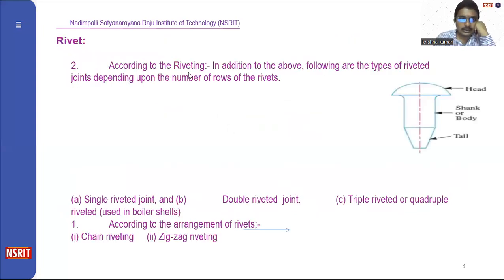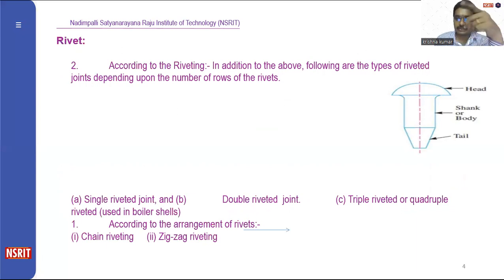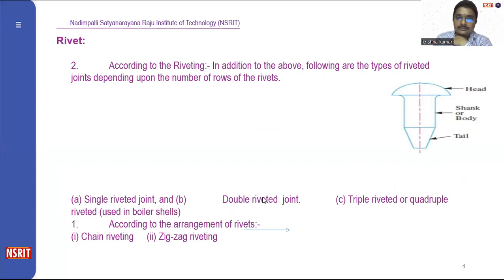According to riveting, in addition to the above types, a riveted joint also depends upon the number of rows of rivets — whether it may be a single row or a double row. So we have single riveted joints, double riveted joints, and triple riveted joints, which are used in boiler shells.